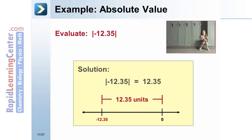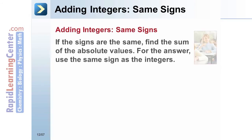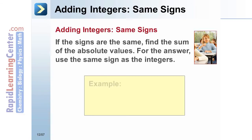Adding integers with the same signs: if the signs are the same, find the sum of the absolute values; use the same sign as the integers for the answer. Example: negative 5 plus negative 8 — find the sum of 5 and 8, then add the negative sign. Negative 5 plus negative 8 equals negative 13.